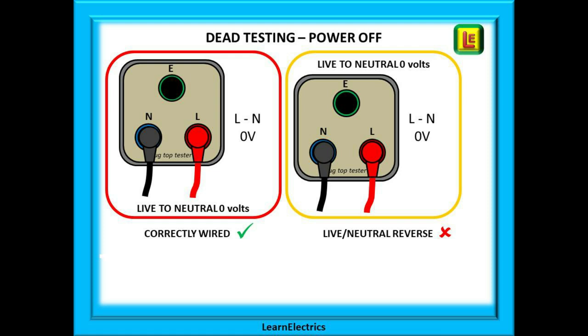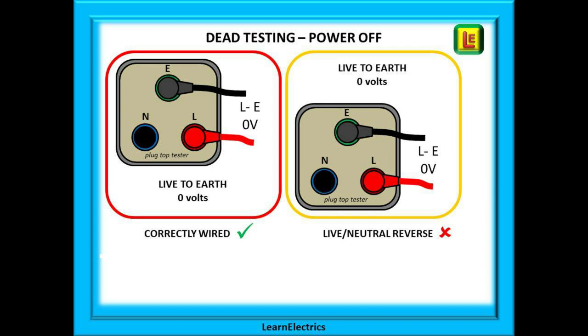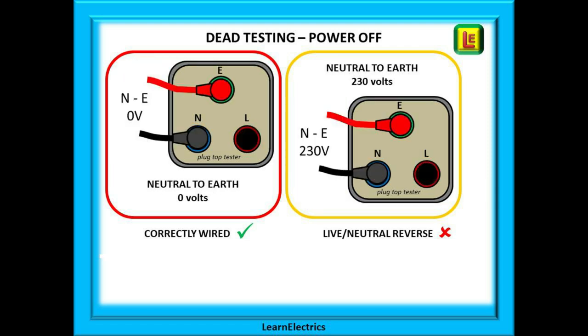Now safely isolate the circuit at the MCB and lock it off. We are now testing for dead. We've shown here side by side the results for a good circuit on the left and for a reverse wired circuit on the right. You can see that both show zero volts between live and neutral. Between live and earth shows zero volts in both cases. But when we test neutral to earth, the reverse wired circuit shows 230 volts and not zero volts. To work on this faulty circuit right now would be dangerous, possibly fatal.